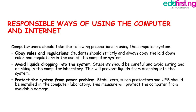Let's talk about responsible ways of using the computer and the internet. Computer users should take the following precautions while using a computer system. First, obey rules and regulations — students should strictly and always obey the laid-down rules and regulations in use of the computer system. Avoid liquids dropping into the system — be careful and avoid eating and drinking in the computer laboratory. This will prevent liquids from dropping into the system. Even while working on your personal computer, keep food, water, and anything that can damage the computer far away. Protect the system from power problems — stabilizers, surge protectors, and UPS should be installed in the computer laboratory. This measure will protect the computer from avoidable damage.